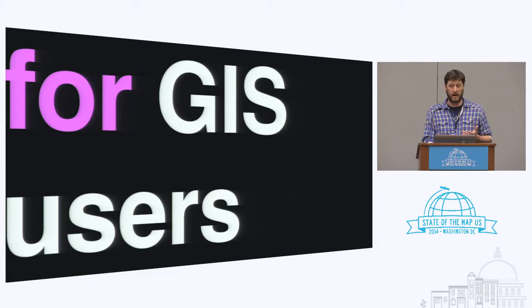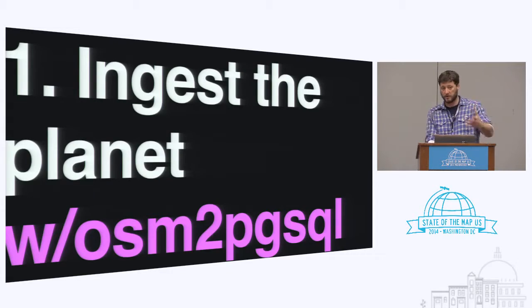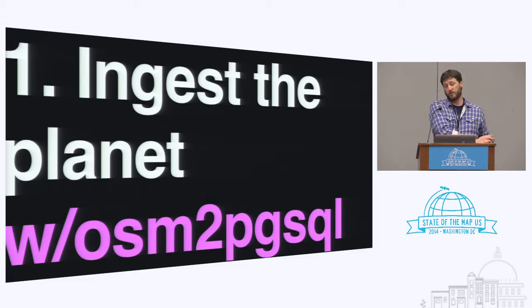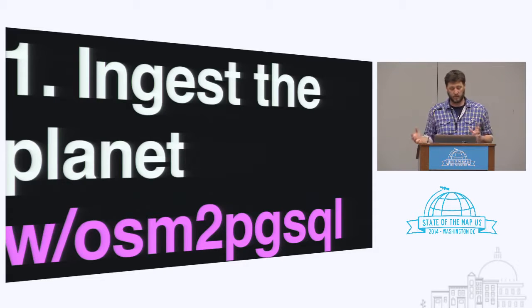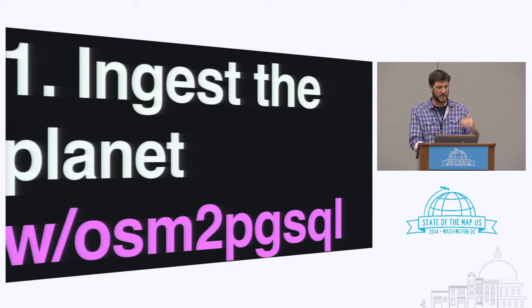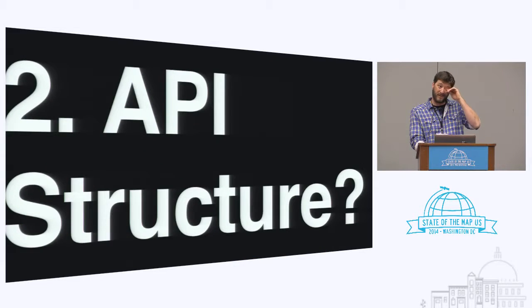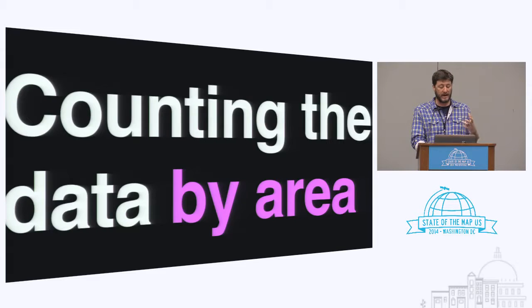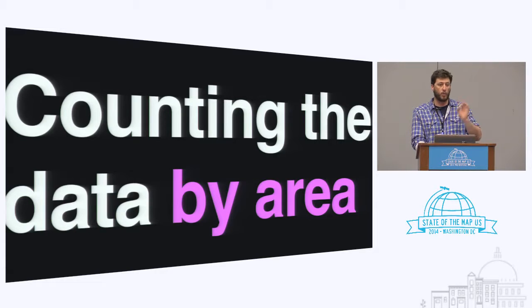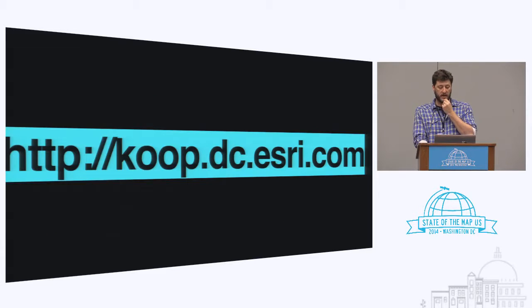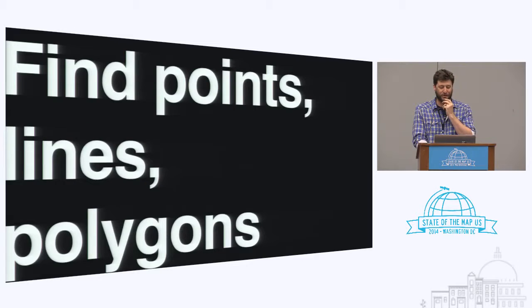The process: step one is ingest the planet. We've already proven we can take Coop, sit it on top of a PostGIS database, and expose climate data as different formats. So we drop OSM into the standard schema and structure. Then the question is: now that I've got a database, how am I going to access and pull it out? That starts with zero-order analysis — counting the data, figuring out where data is and how it's distributed.